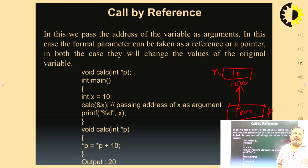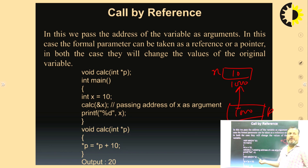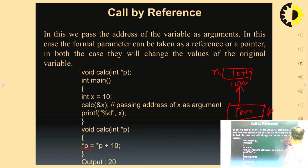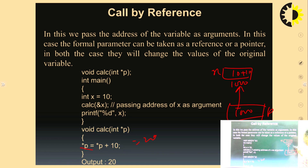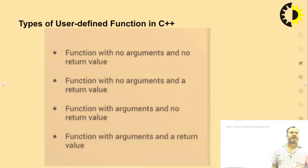In call by reference, we pass the address of the variable. Here, the variable x is 10. We pass the address of x — for example, if the address is 1000, we have passed 1000. That address needs a pointer to store it, so p will store the address. The meaning of *p is value at p — value at 1000 is 10, plus 10 becomes 20. So *p becomes 20, and value at 1000 equals 20. When you print x, it will print 20. Indirectly, we can change the actual value of a variable by passing the address.